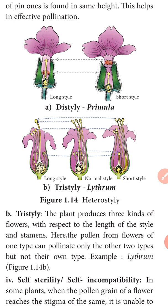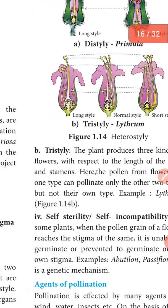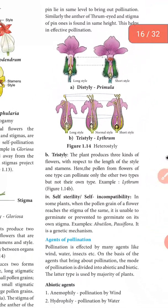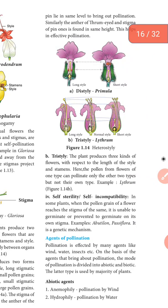This is a tristyly flower. The last one is self-sterility or self-incompatibility. Even if the pollen grain of the flower reaches the stigma, it is unable to germinate.